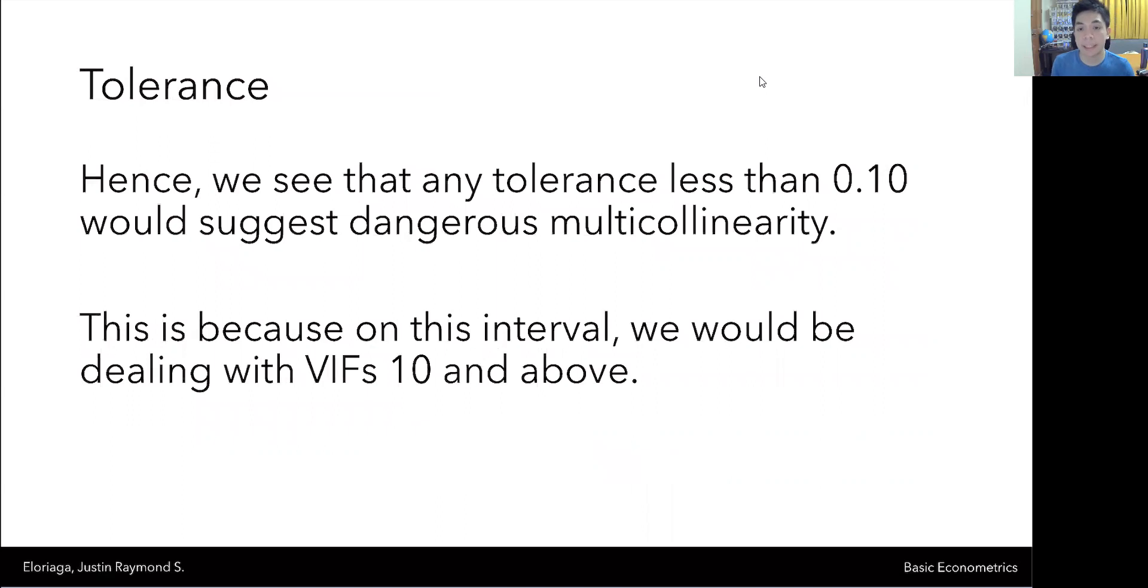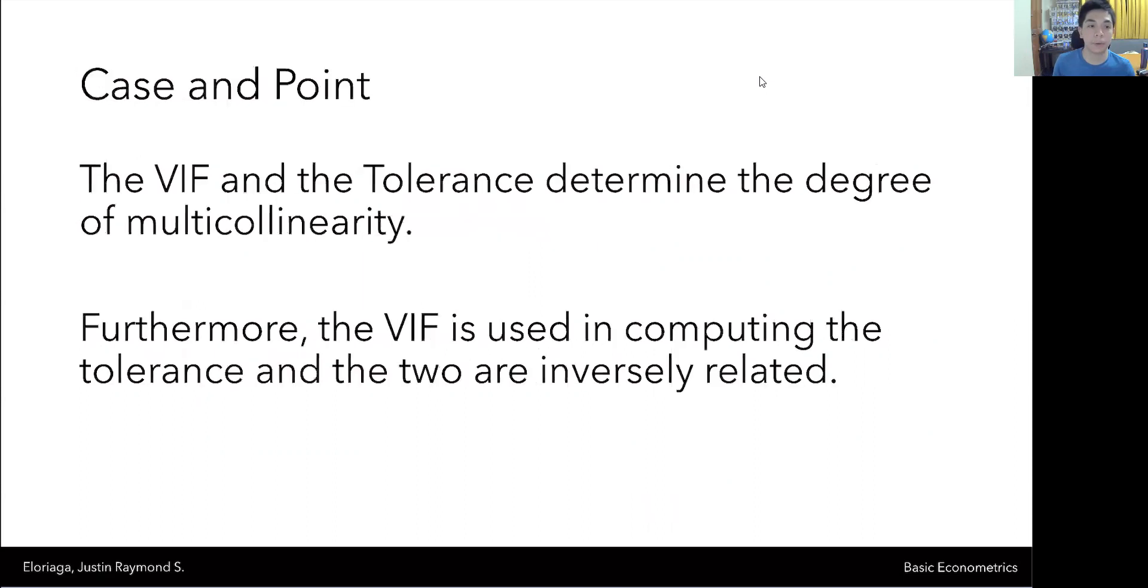Hence, we see that any tolerance less than 0.10 would suggest dangerous multicollinearity. And this is because on this interval, we would be dealing with a VIF of 10 and above. Case in point, the VIF and the tolerance determine the degree of multicollinearity. Furthermore, the VIF is used in computing the tolerance and the two are likewise inversely related.